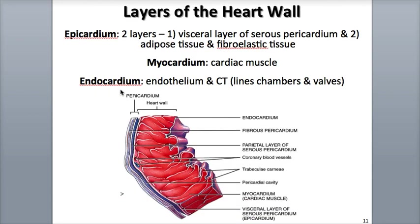The endocardium is the thin inner layer of the heart wall that consists of a smooth layer of endothelium on top of a layer of connective tissue. It lines the heart's four chambers and covers the valves, helping to minimize friction as blood flows through the heart.